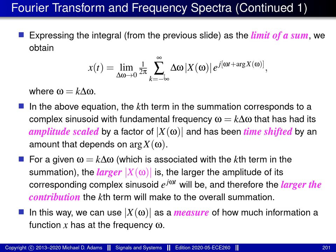Looking at this equation in more detail, essentially we have a sum where each term is a complex sinusoid of the form e to the j omega t, shifted by an amount that depends on the argument of big X of omega, and amplitude-scaled by a factor that depends on the magnitude of big X of omega. So for a given omega associated with the k-th term in the summation, the larger the magnitude of big X of omega, the larger the amplitude of the corresponding complex sinusoid, and therefore the larger the contribution the k-th term makes to the overall summation. In this way, we can use the magnitude of big X of omega as a measure of how much information the function little x has at frequency omega.